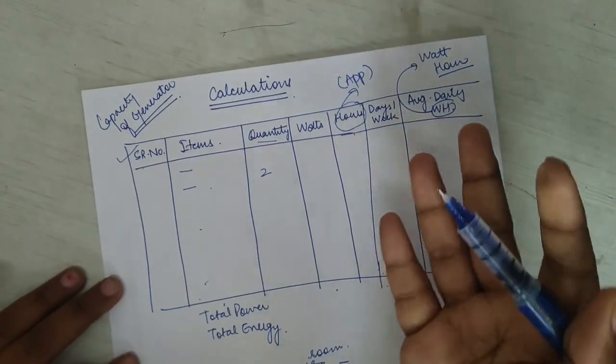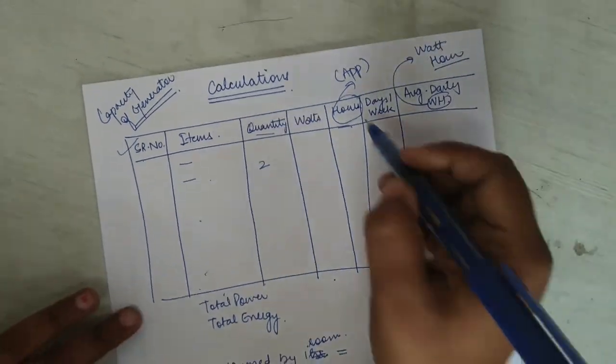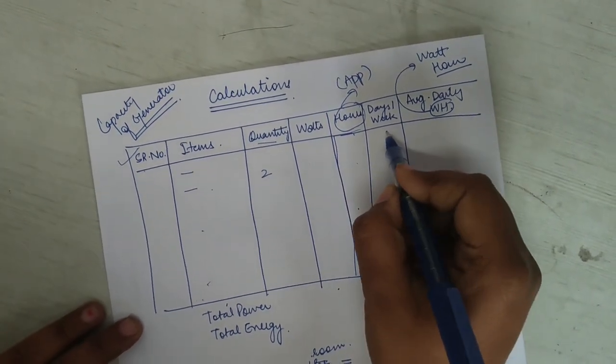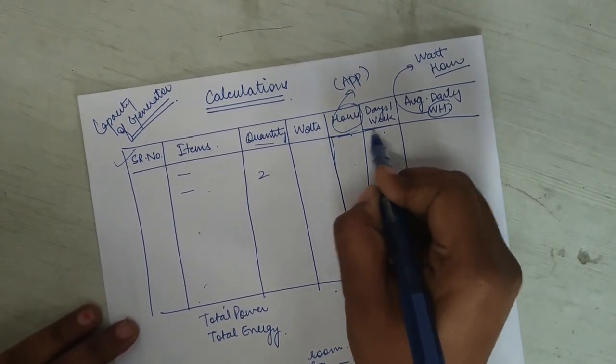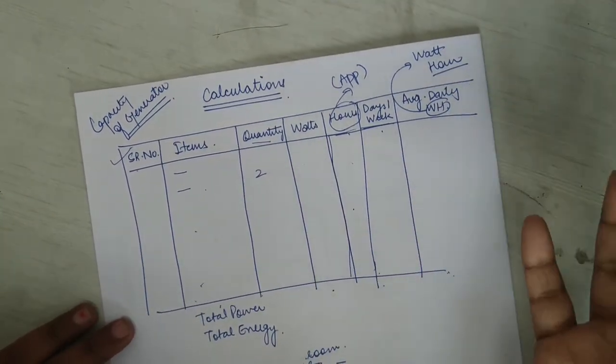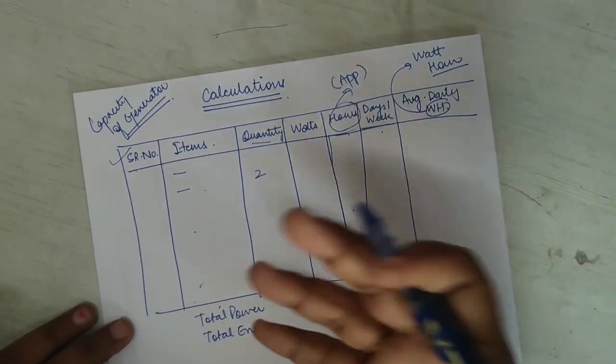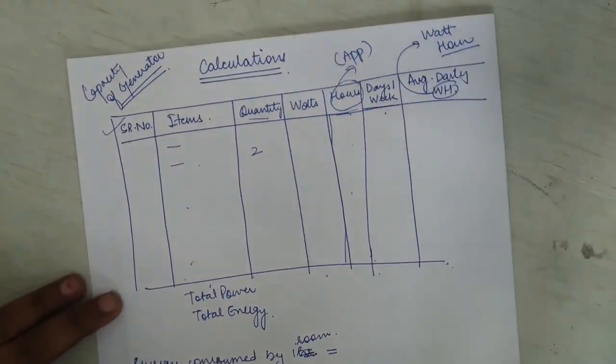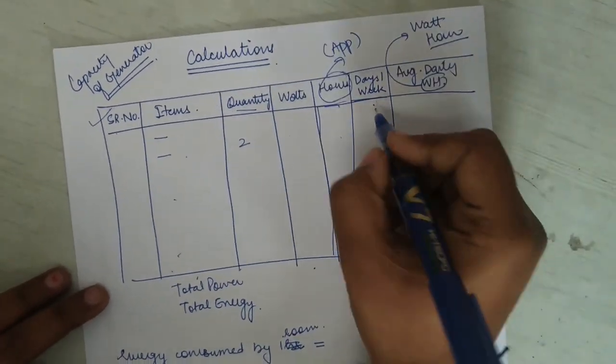Then the number of hours—this is approximate which we have to add. Approximately you have to tell that in your house or in your building, how many hours we are going to use that particular appliance. After that, we need to tell how many days in a week that particular appliance will be used.